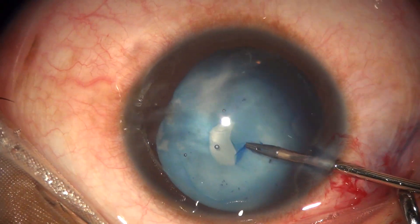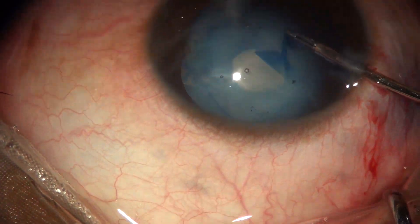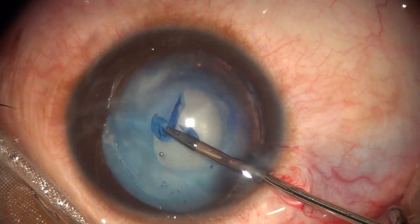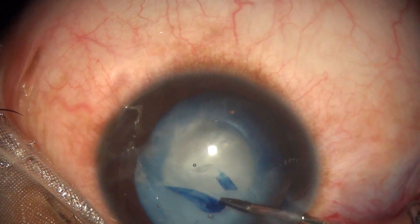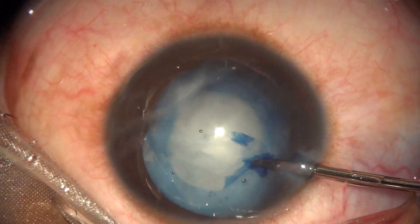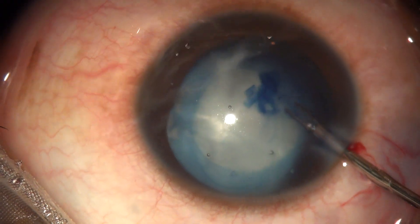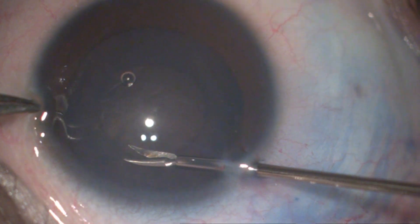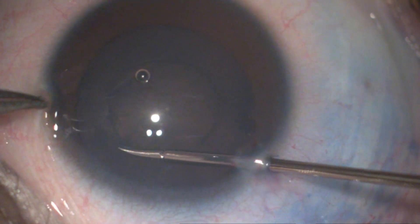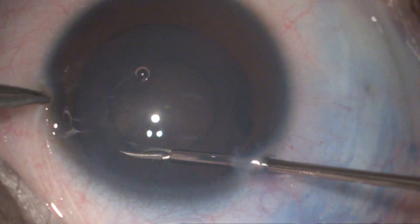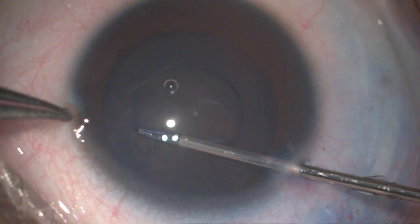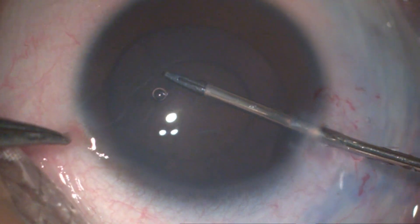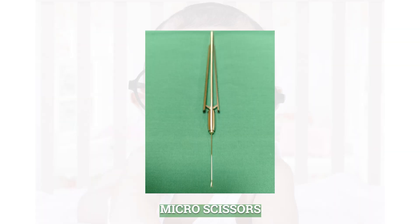A spiral technique can be tried for a more controlled capsulorexis whenever there is risk of peripheral runoff. If the capsulotomy is not adequate, it can be extended by giving a tangential extension using micro-scissors.